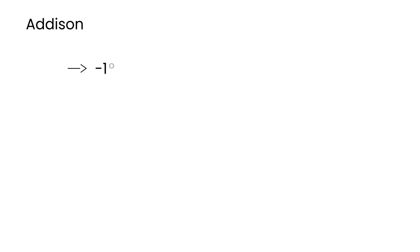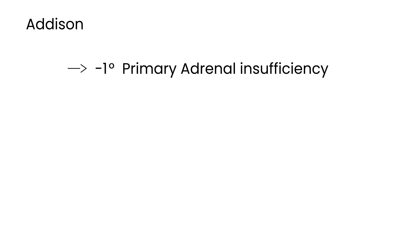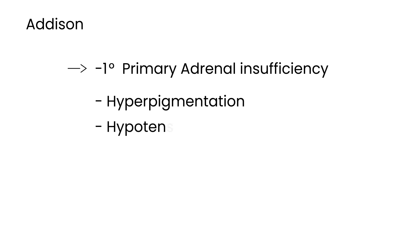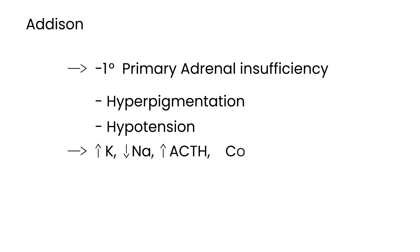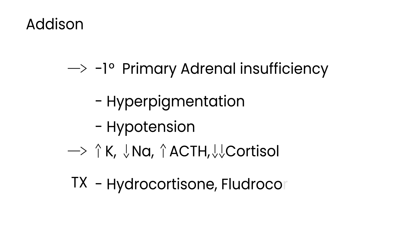Quick recap: Addison's disease is primary adrenal insufficiency. Symptoms include hyperpigmentation, which is the most specific finding. Lab tests will show elevated potassium, low sodium, high ACTH levels, and low cortisol levels. Treatment involves hormone replacement with hydrocortisone and fludrocortisone.